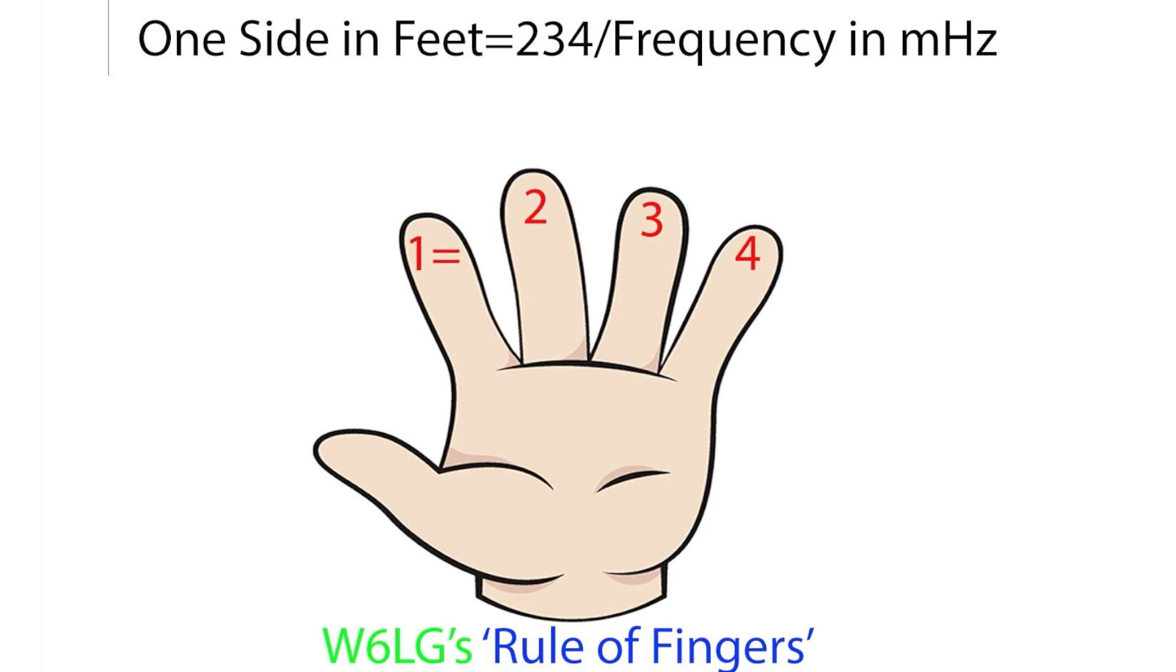So, one side in feet equals 234 divided by 14.2 megahertz, which equals roughly 16.5 feet or 16 feet 6 inches.